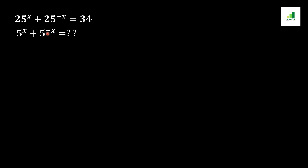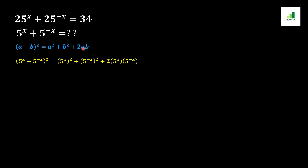As we know, the (a + b) whole square formula is equal to a squared plus b squared plus 2ab. If 5 to the power x is a and 5 to the power minus x is b, then we apply squaring on this formula — that is, we expand using the (a + b) whole square formula.